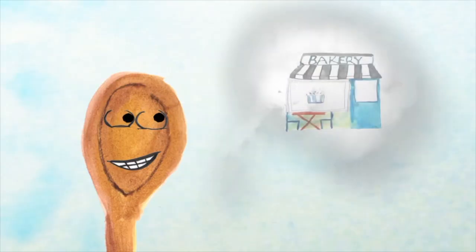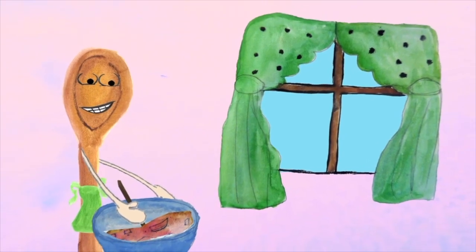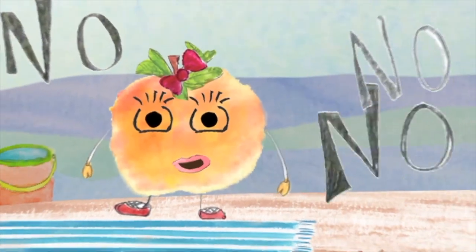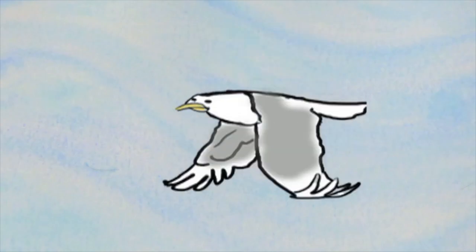Hello, said Mr. Spoon, I would like to scoop you up and make a cobbler pie. No, no, no, said Peach, I'd like to stay at the beach and count the seagulls in the sky.